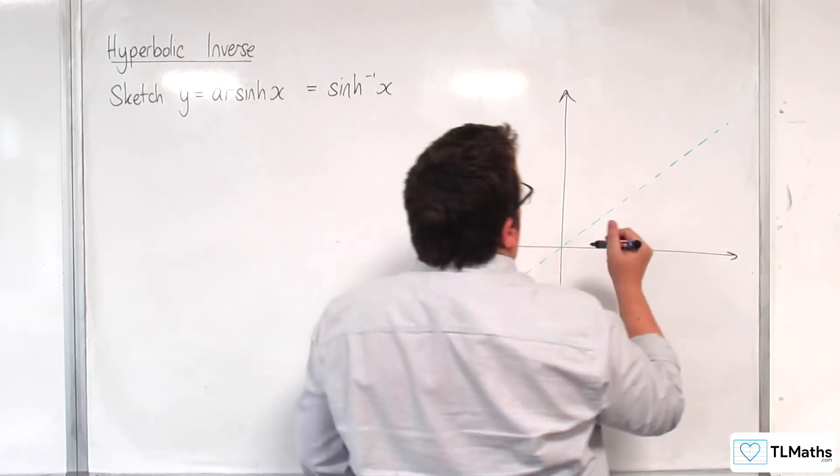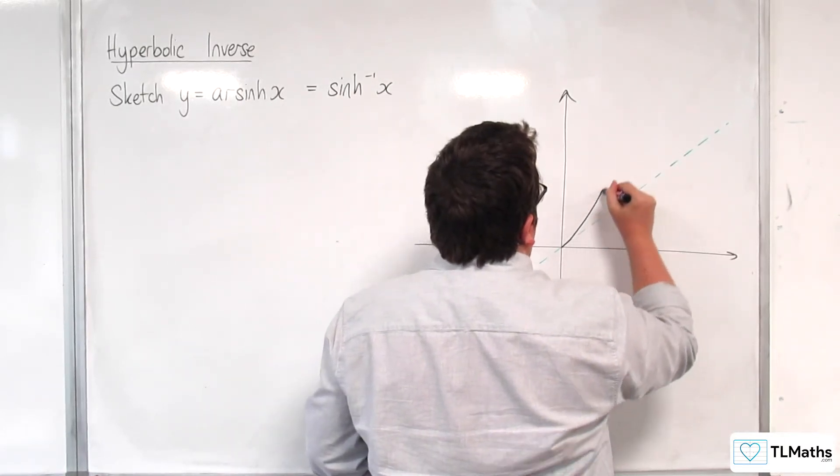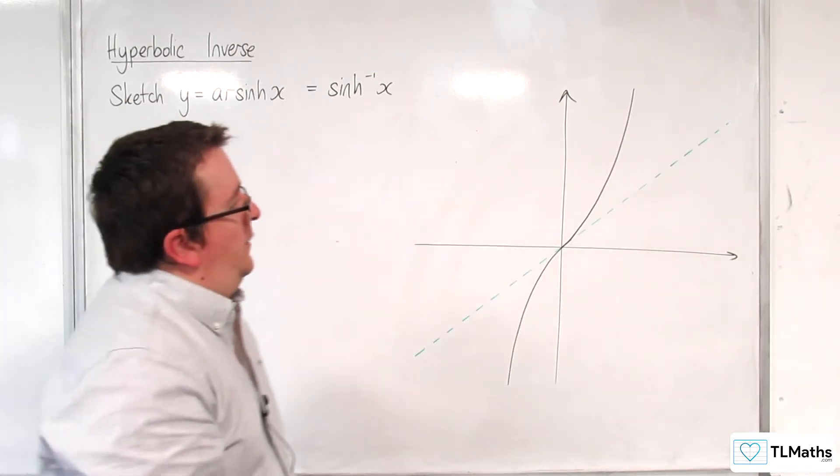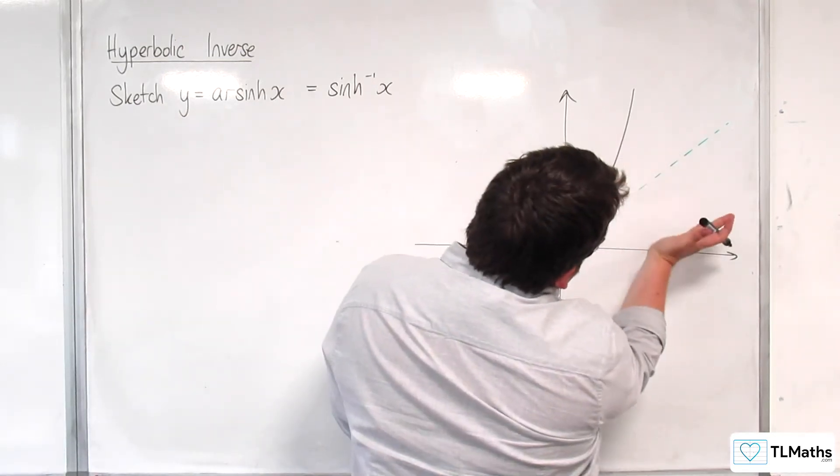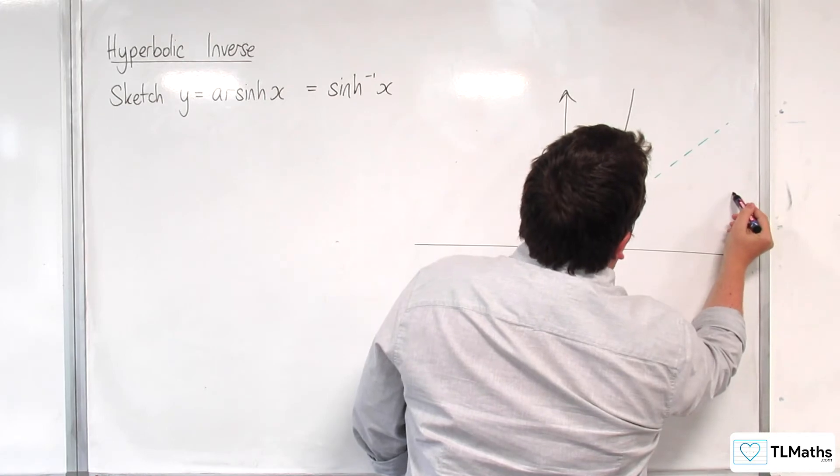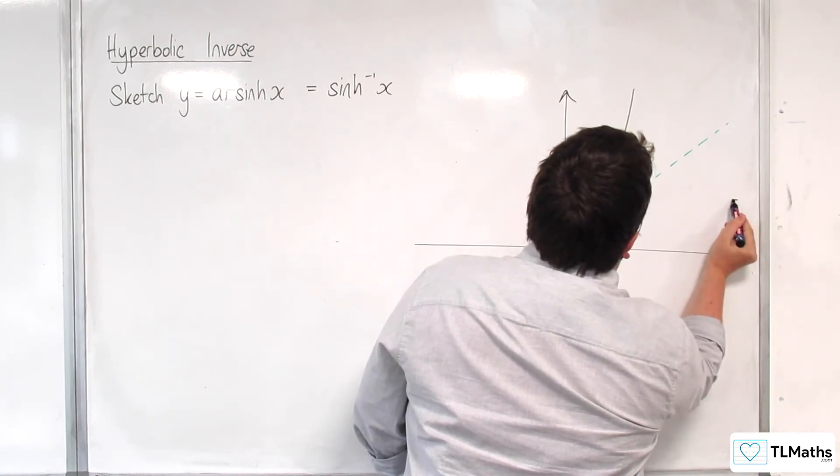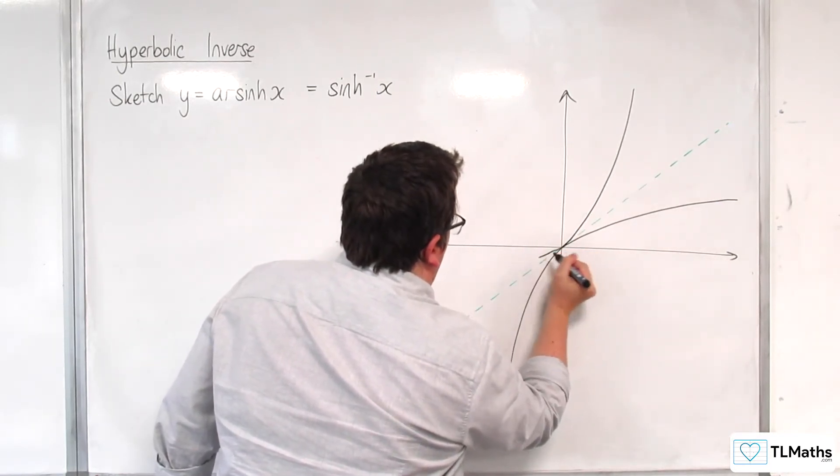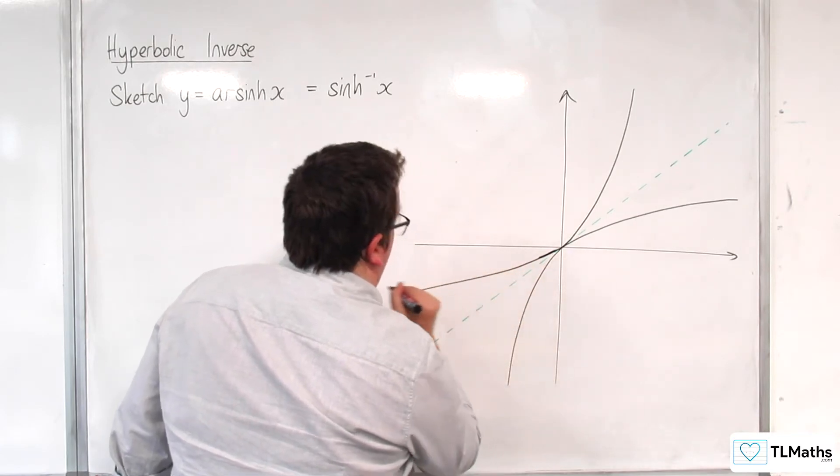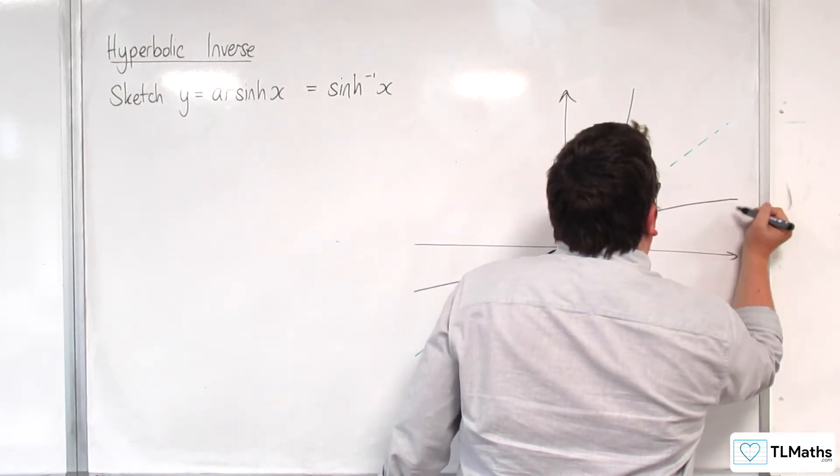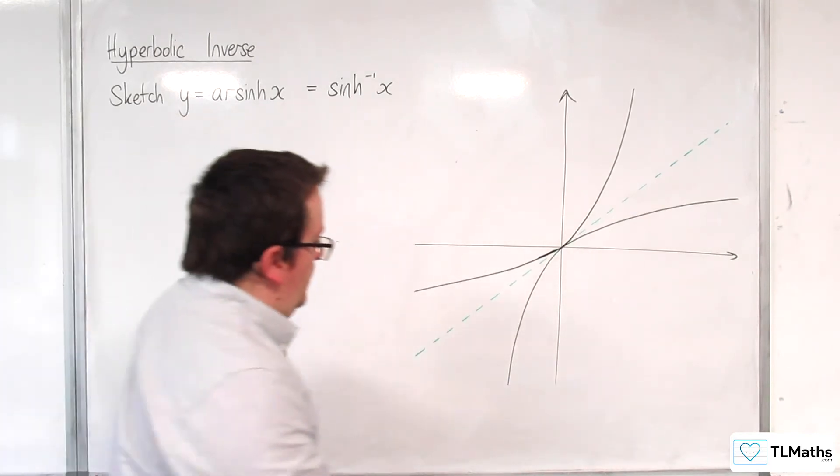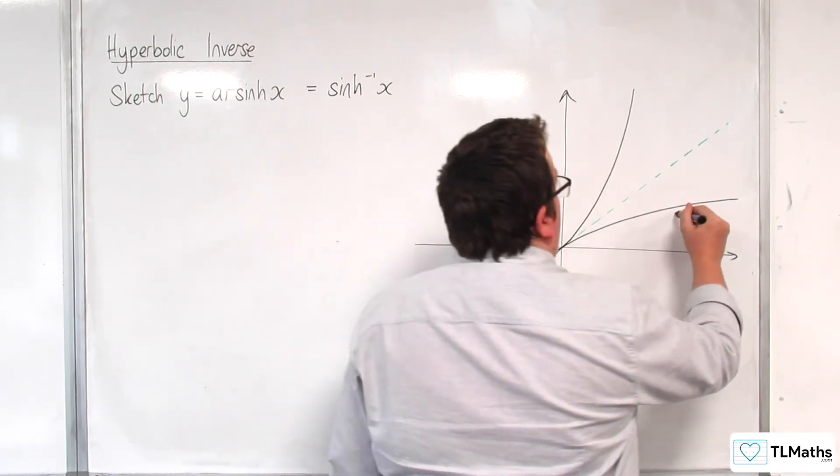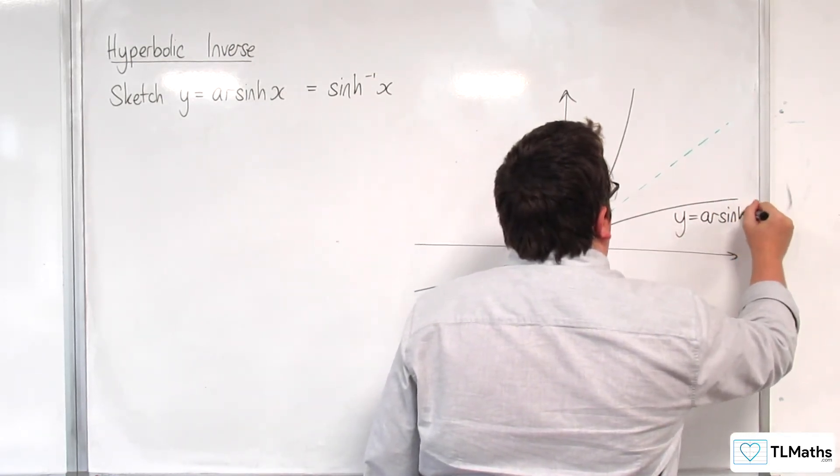So y equals sinh x is going to look something like this. And so its inverse function must be a reflection of that. Something like—it's not very easy to draw—like that. Now, this would be y equals sinh of x, and this is y equals arsinh of x.